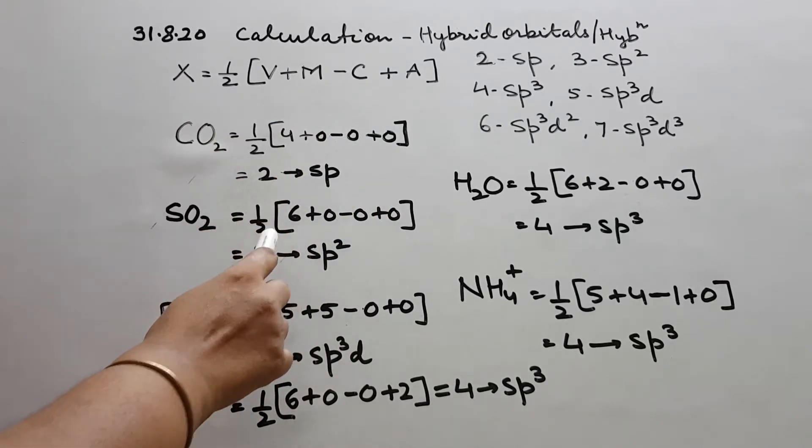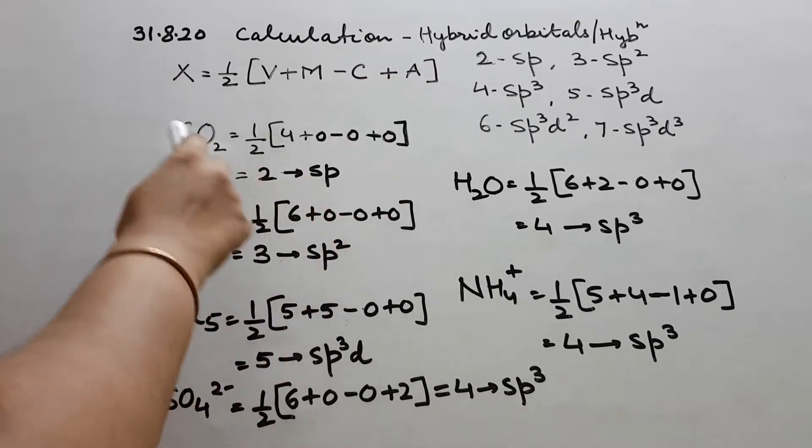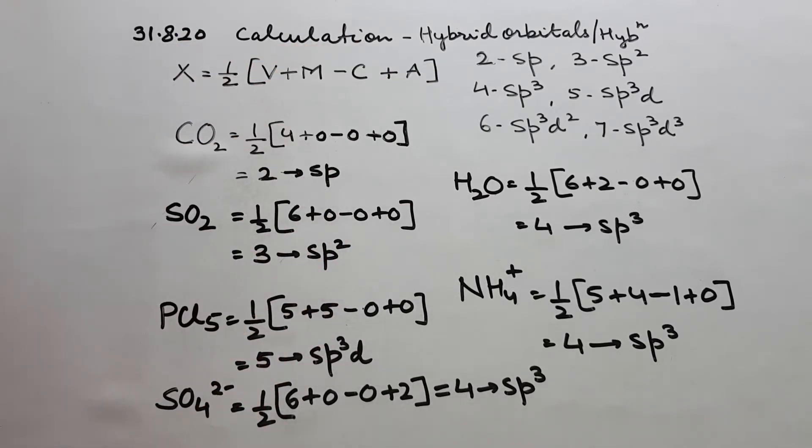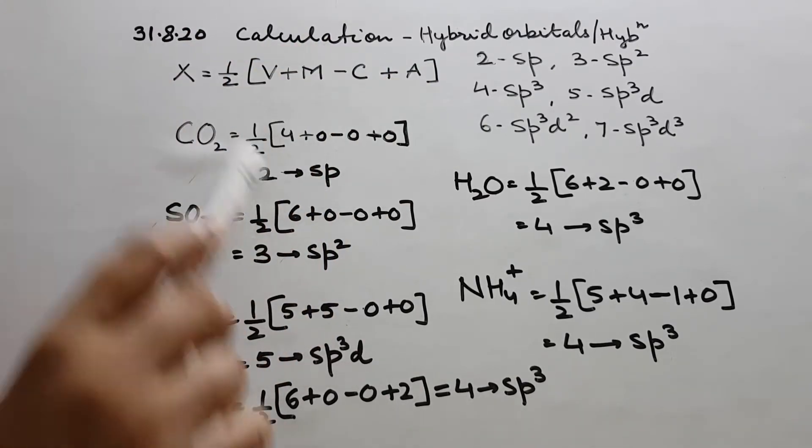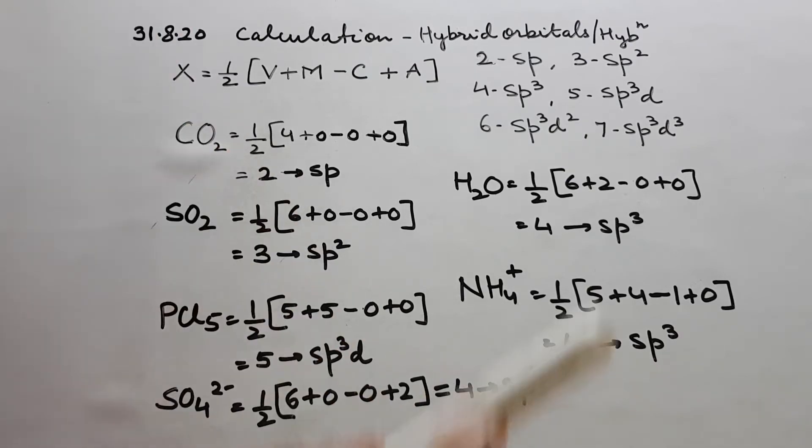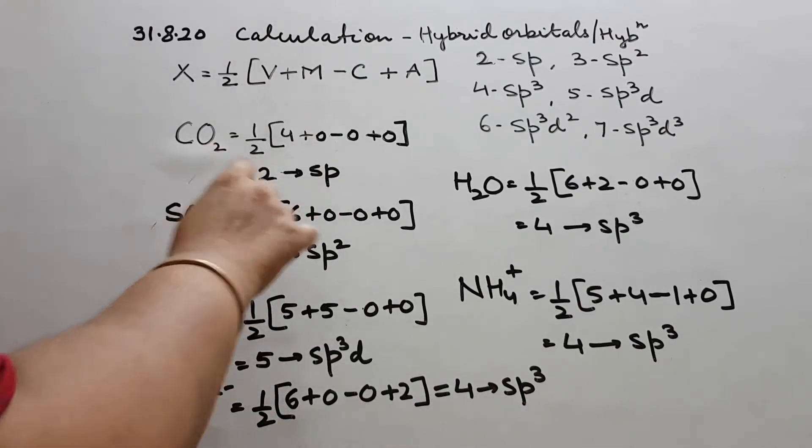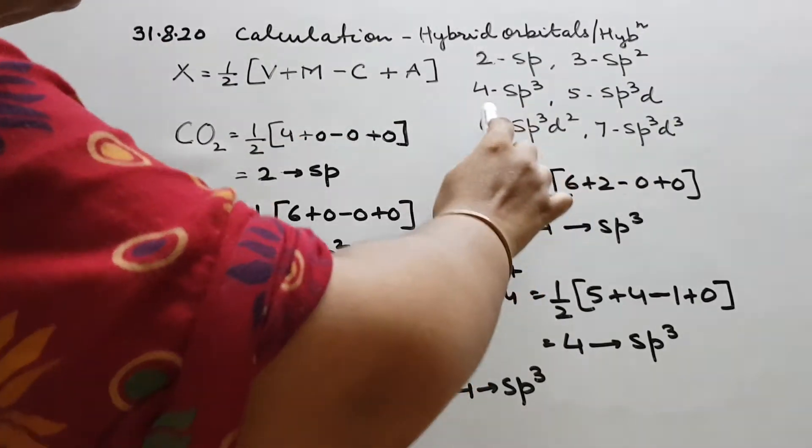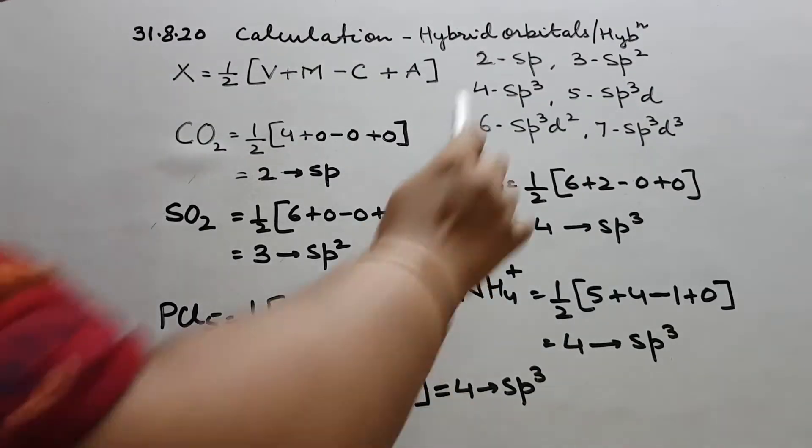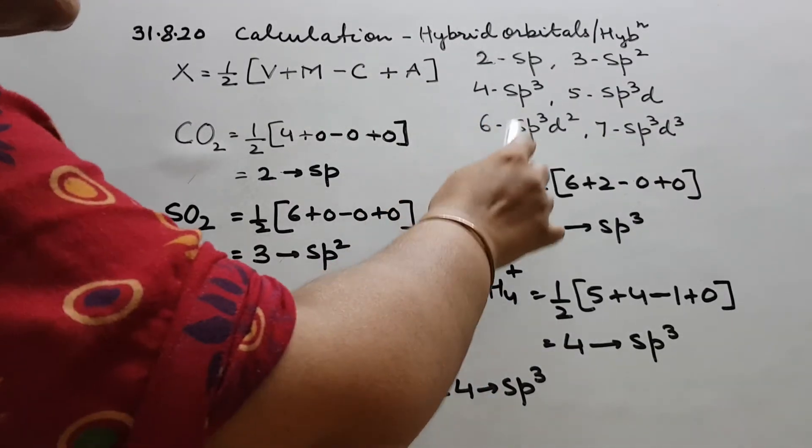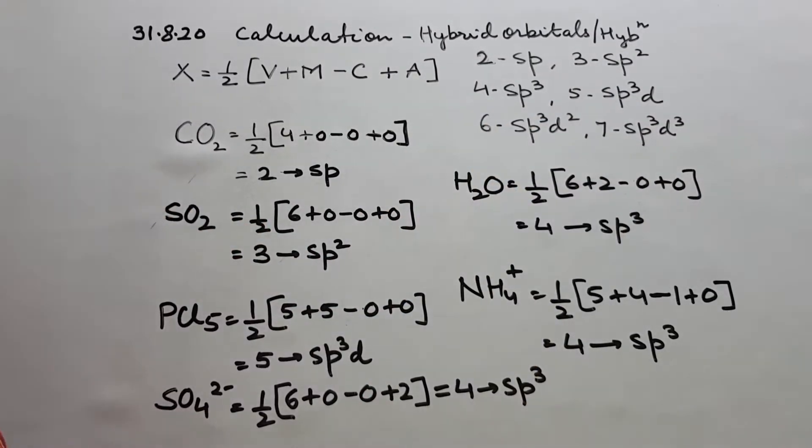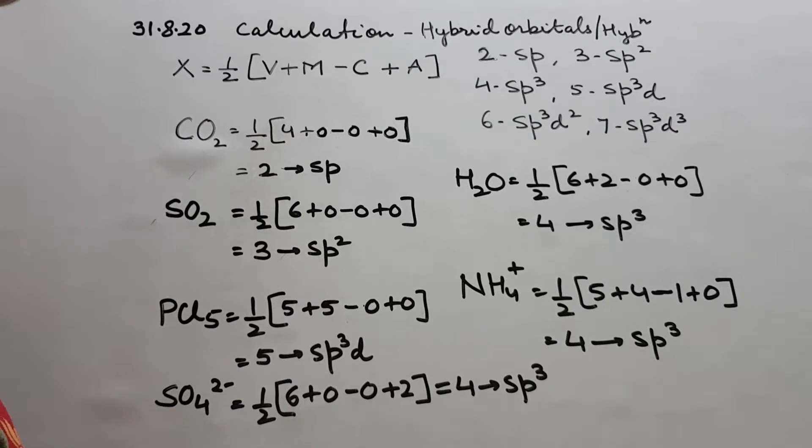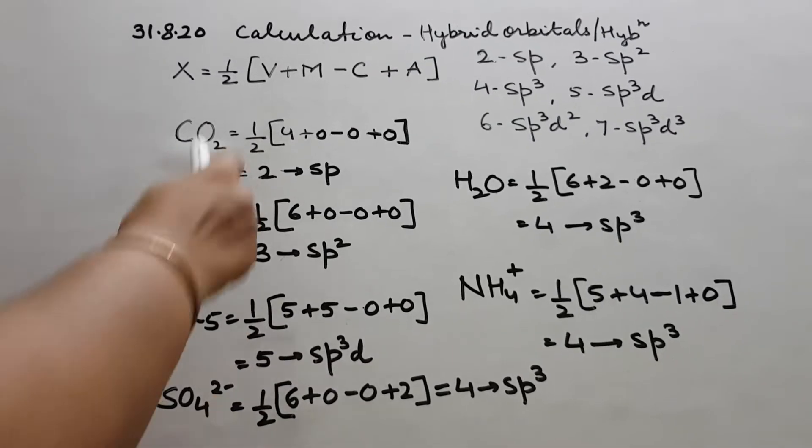And children when we have 2 hybrid orbitals, x is the number of hybrid orbitals. When we have 2, the hybridization is sp. 2 is sp, 3 is sp2, 4 is sp3, 5 is sp3d, 6 is sp3d2, and 7 is sp3d3. So I took just one example.